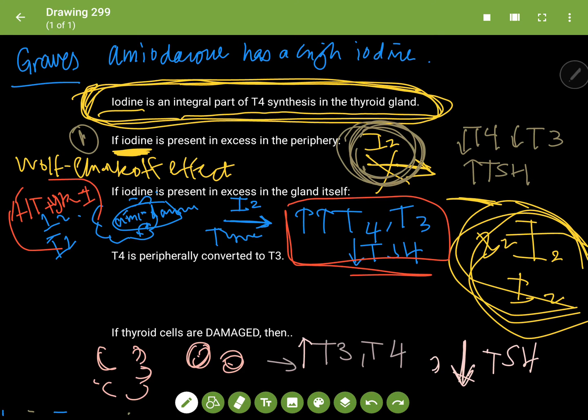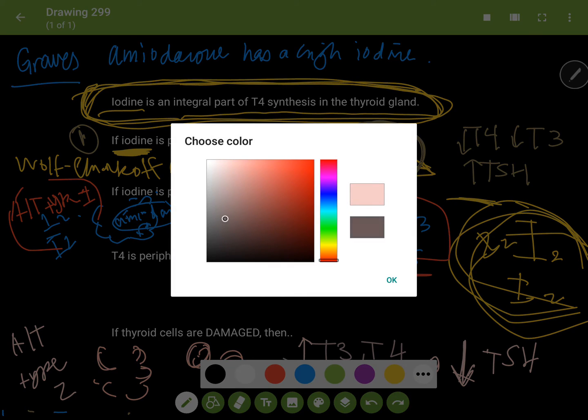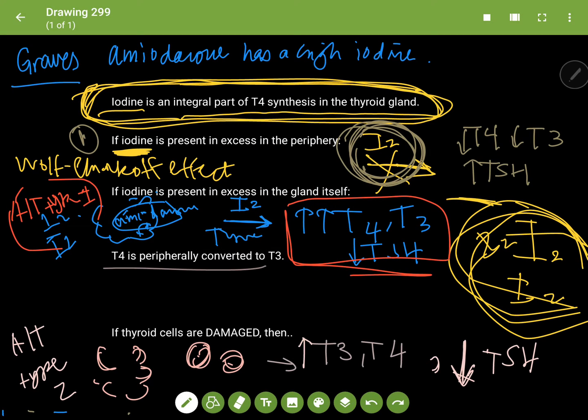This is again called AIT type 2. Lastly, I'm going to talk about this—it looks like something we've seen before in the previous video that I made. T4 is peripherally converted to T3, that's a fact, and amiodarone can block this.